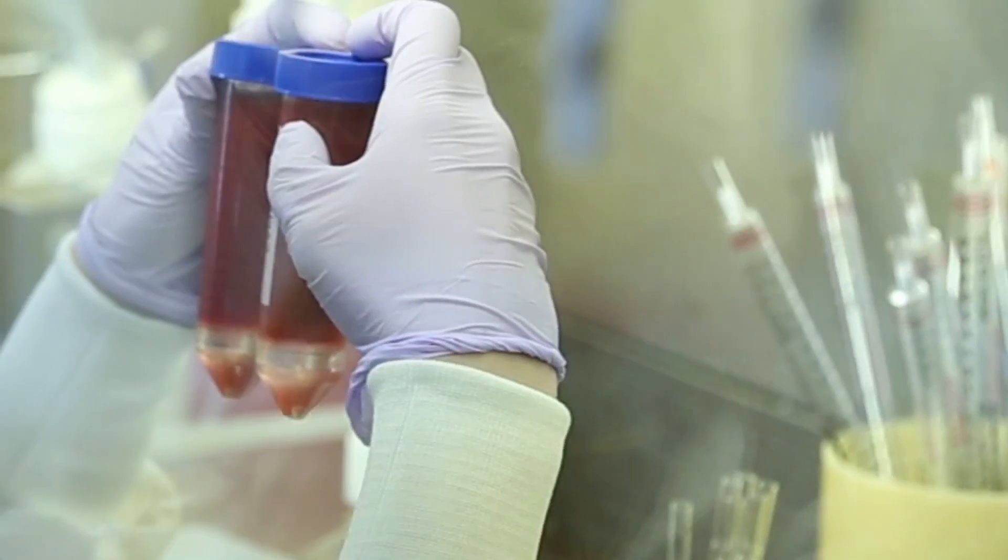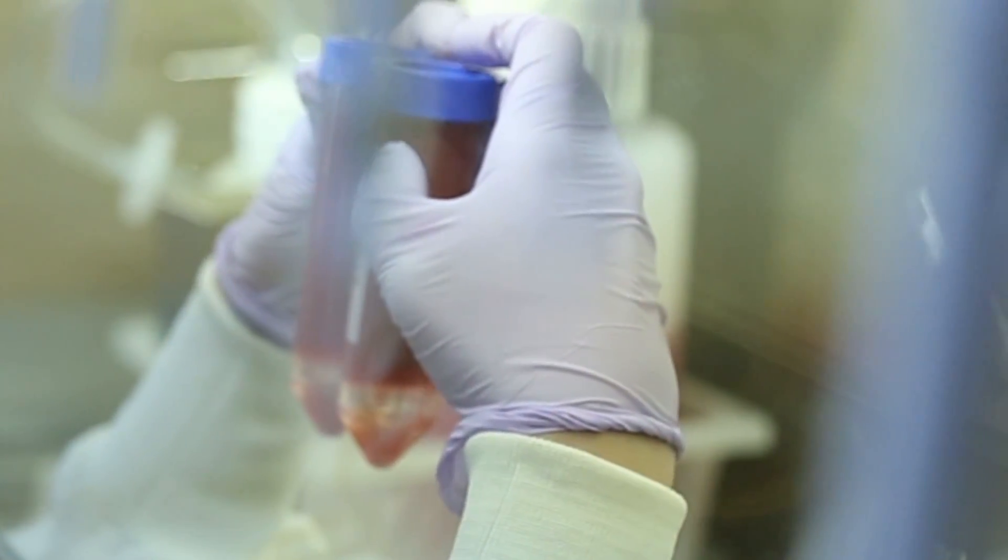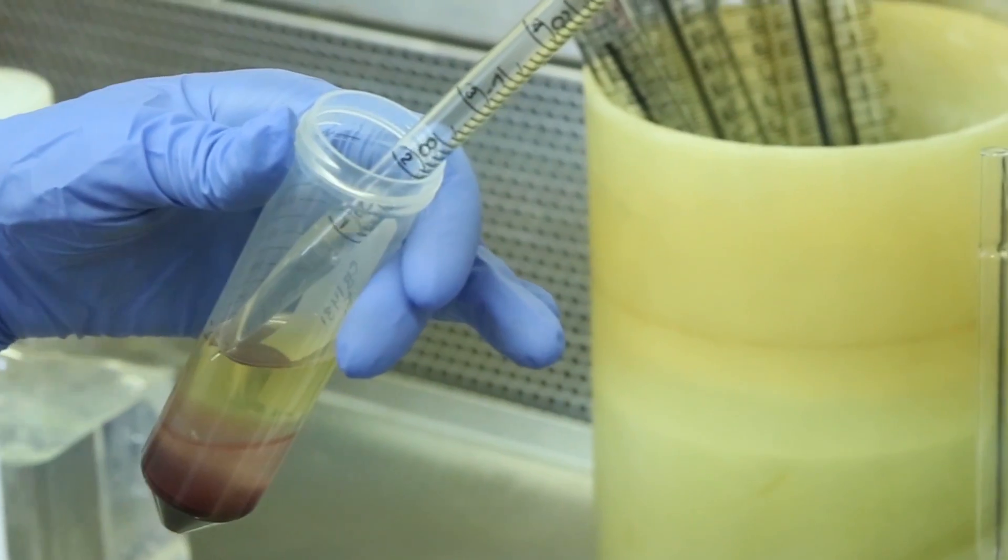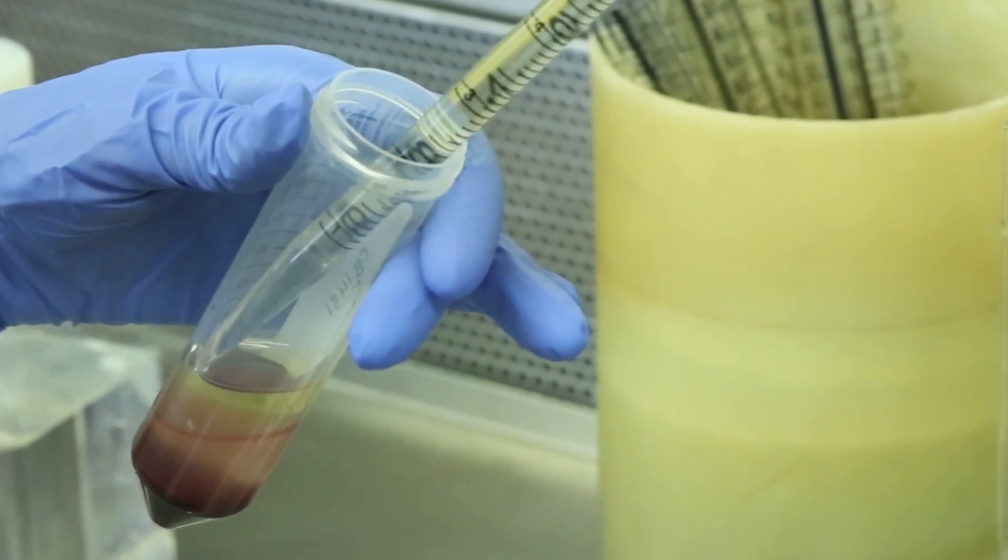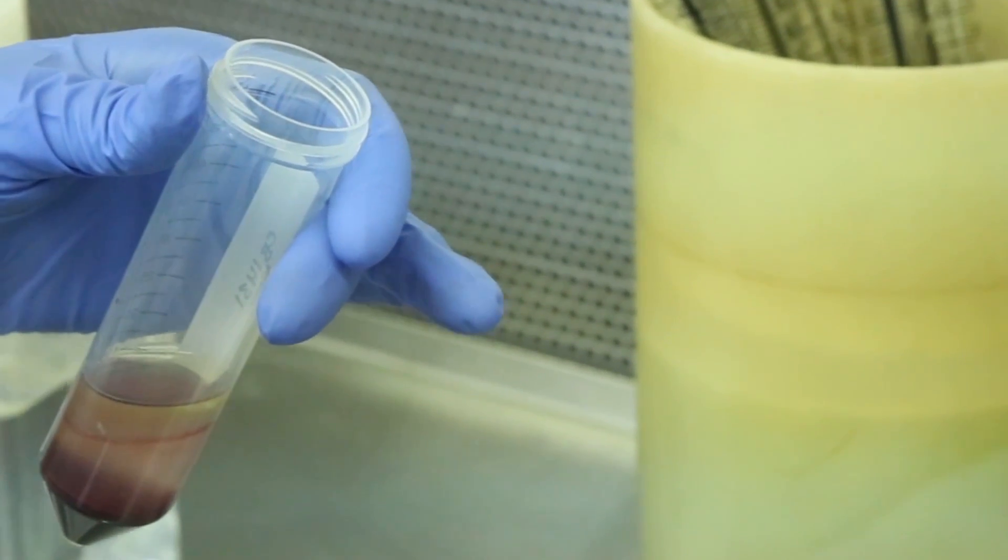We have a tissue culture room where essentially the parasites are cultured in human blood. The malaria parasite infects the red blood cells and we're able to have it survive in culture over long periods of time. It's not a risk to humans when it's in that condition in the tissue culture room. All it's able to do is survive in the red blood cell, it can't go anywhere from there to infect you, so it's not terribly dangerous to work with.